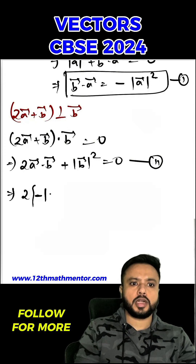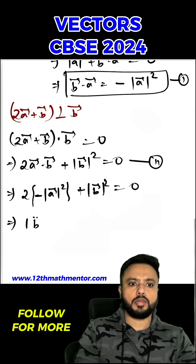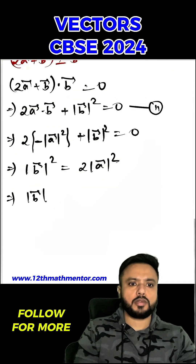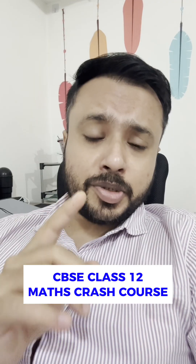Substituting, we get 2×(-|A|²) + |B|² = 0, which gives |B|² = 2|A|². Therefore, |B| = √2|A|. This is exactly what we had to prove.